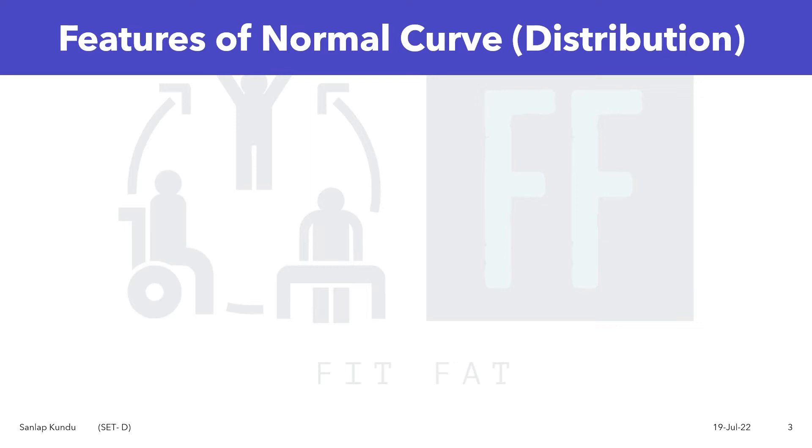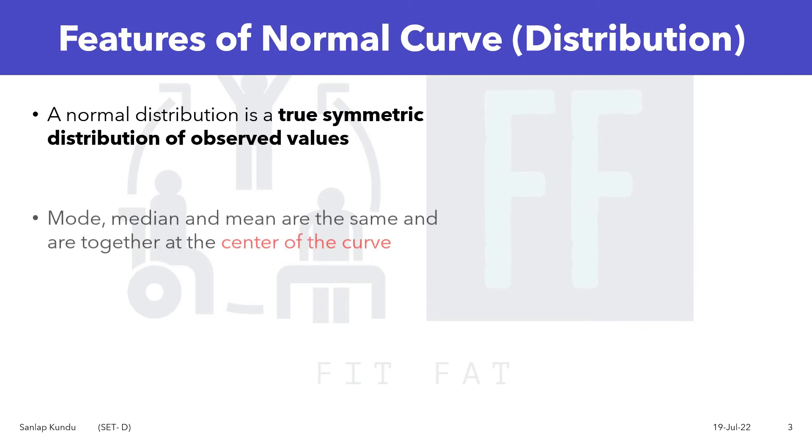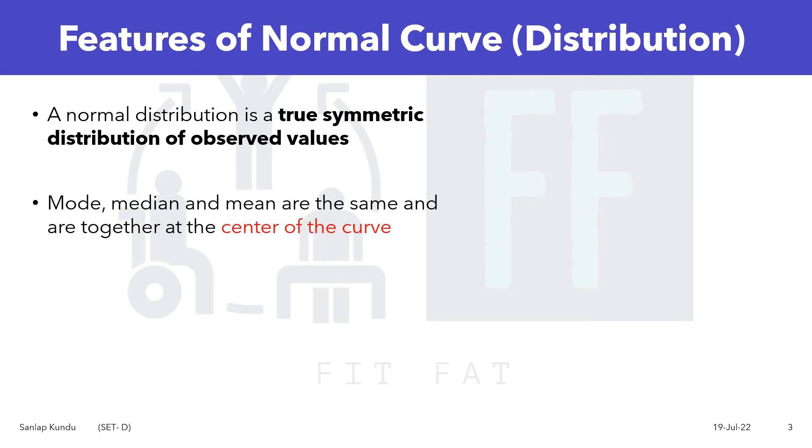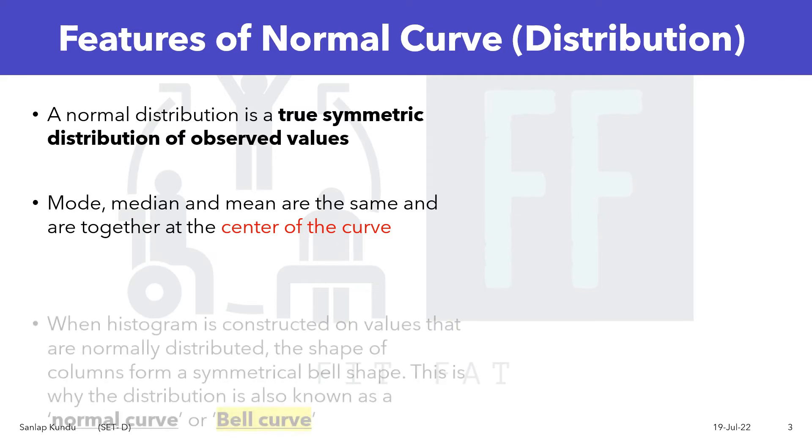Now let's see the features of normal curve or normal distribution. A normal distribution is a true symmetric distribution of observed values. Mode, median, and mean are the same and are together at the center of the curve.